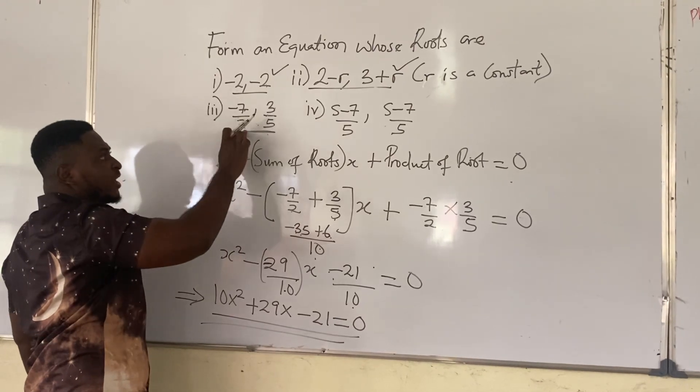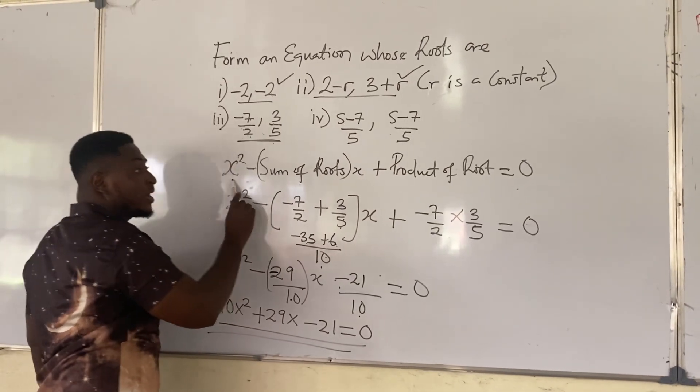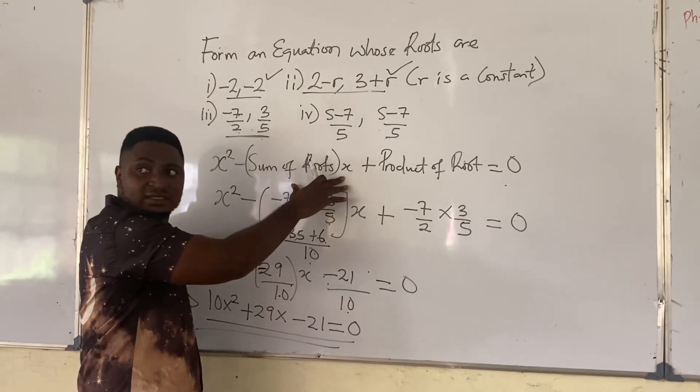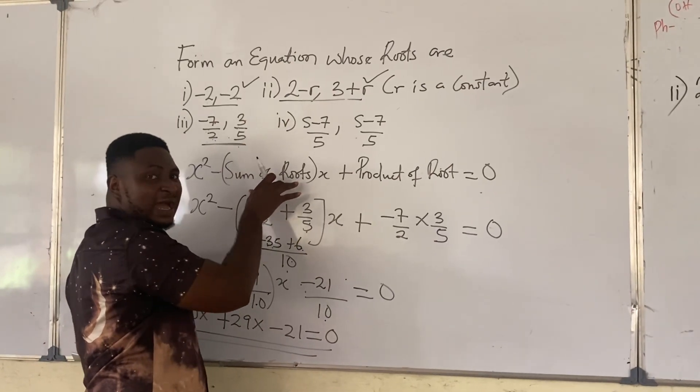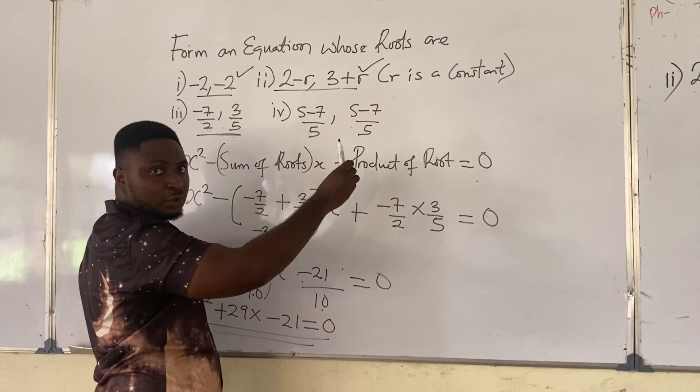Now to form an equation whose roots are minus 7 over 2 and 3 over 5, first things first, we need to write the formula we're going to use. This is the formula we're going to use: X squared minus sum of roots X. Sum of roots means add up the 2 roots. Product of roots means we should multiply the 2 roots.